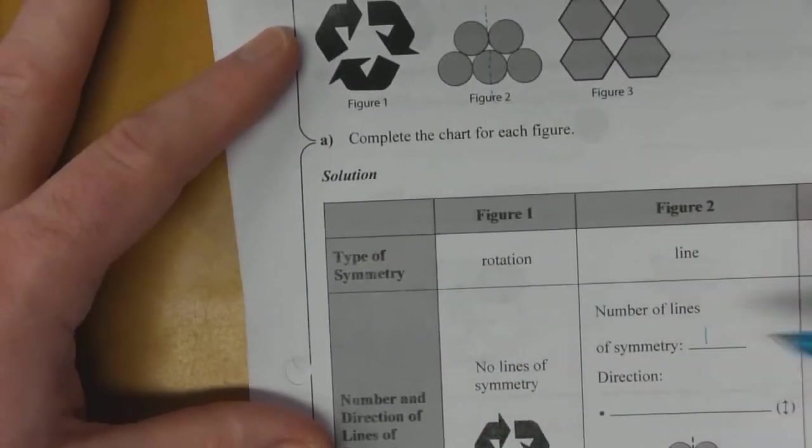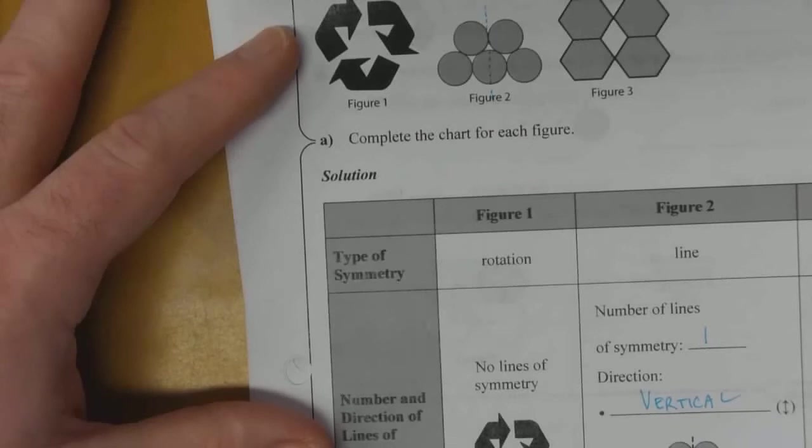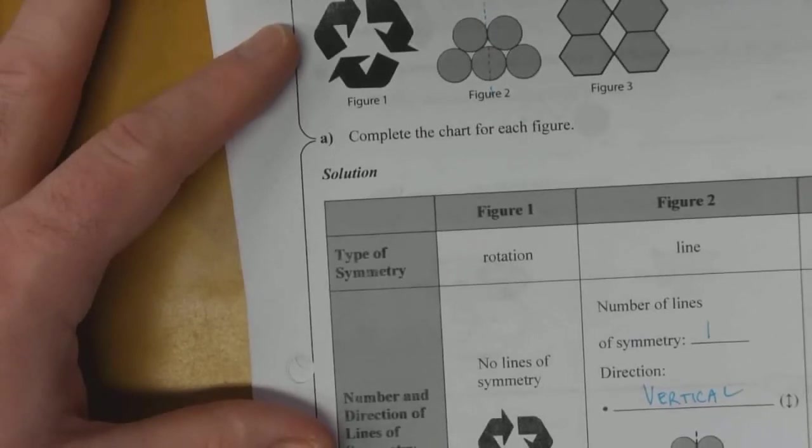So there's one line of symmetry and it's vertical. Order of rotation, as I said, it doesn't have rotational symmetry.